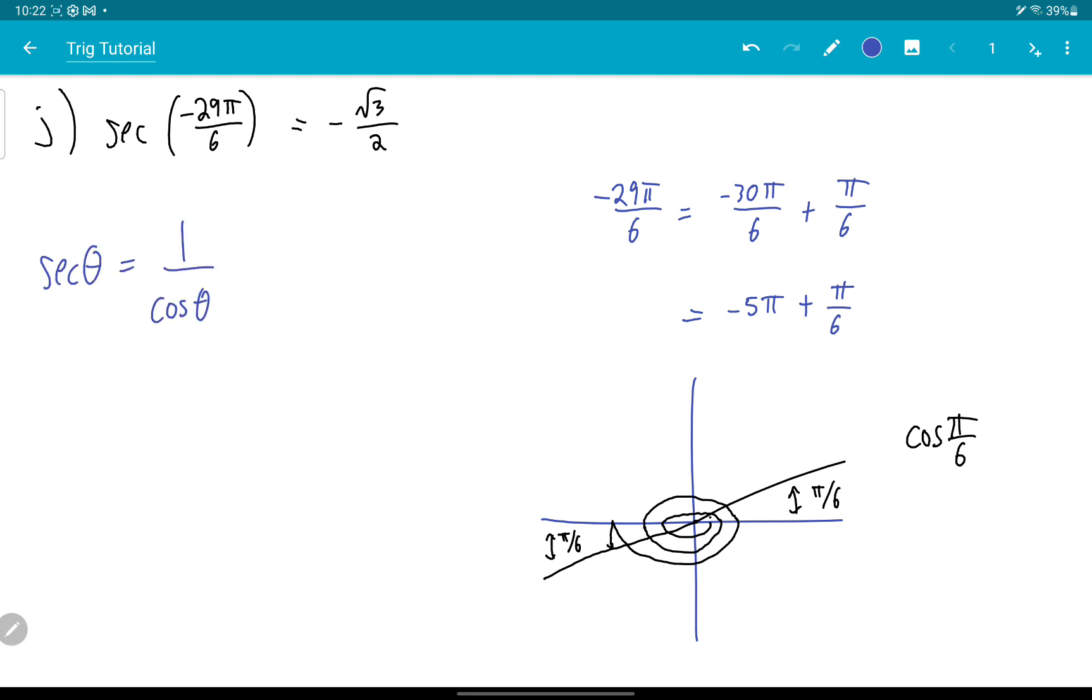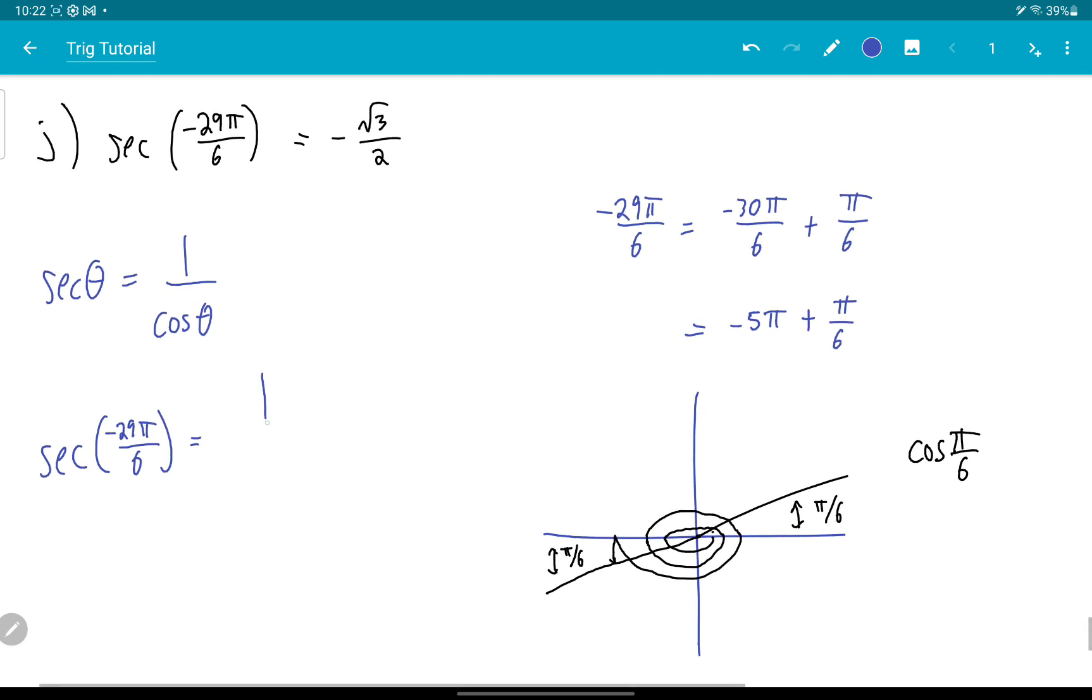So secant of minus 29π over 6 is 1 over cosine of minus 29π over 6.